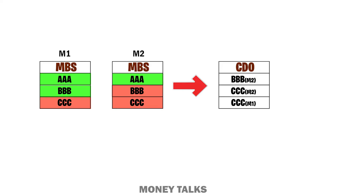In the CDO, the loans from the unsold tranches were arranged into different tranches, typically labeled as senior, mezzanine, and equity tranches. The senior tranche was the least risky and considered the safest. The mezzanine tranche was riskier than the senior tranche but offered higher potential returns. The equity tranche was the riskiest, offering the highest potential returns but being the first to absorb losses if the underlying assets performed poorly.